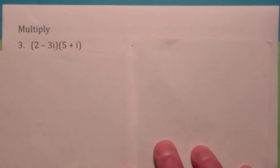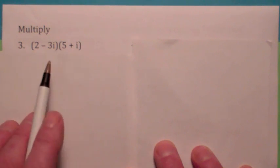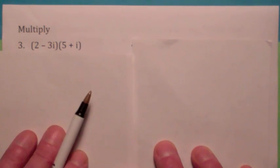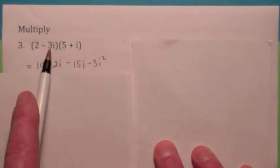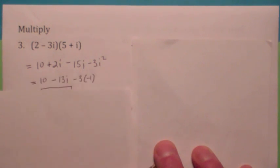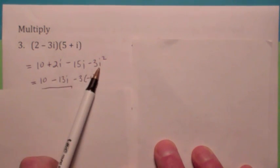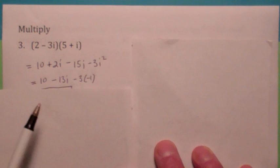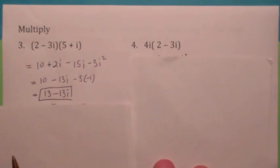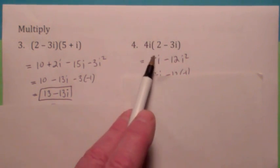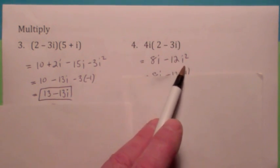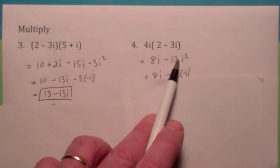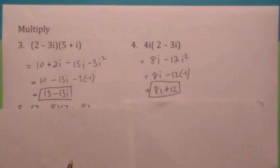Simplifying some expressions here. When you multiply this out using the FOIL method, notice the last term, you get -3i². Of course, i² = -1, so that becomes +3. That's why your final answer would be 13 - 13i. Same is true here. When you use the distributive law to multiply this out, the first term is 8i, but the last term is going to be -12i², which becomes a +12. That's why your answer is 8i + 12.